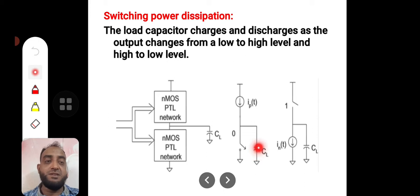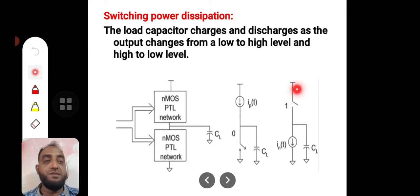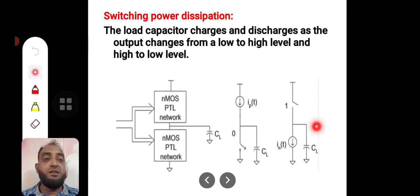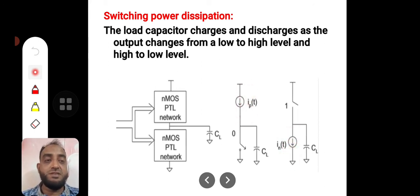Meanwhile it is charging the capacitor. For other combinations of inputs, when the logic input changes at the gate, the pull-up network will be off and the pull-down network will be on. When the pull-down network turns on, the fully charged capacitor gets a path to discharge through the pull-down network to ground. Current now flows in the pull-down network, whereas previously it flowed in the pull-up network.